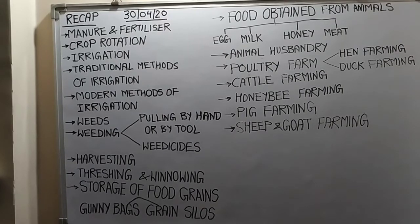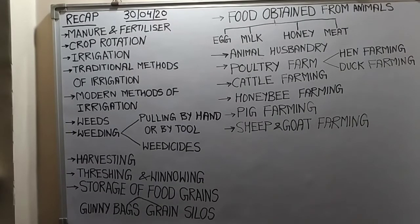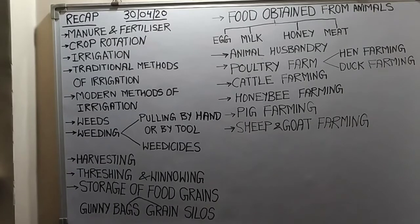Fertilizers are highly soluble in water and are easily absorbed by the roots of a plant. They are made in factories and are easy to transport, store, and handle. However, if the farmer uses excess fertilizer in their field, it makes the soil less fertile, because more chemical fertilizer makes the soil acidic. Instead of providing nutrients, they damage the crops, and when they are washed away with water, they cause water pollution.